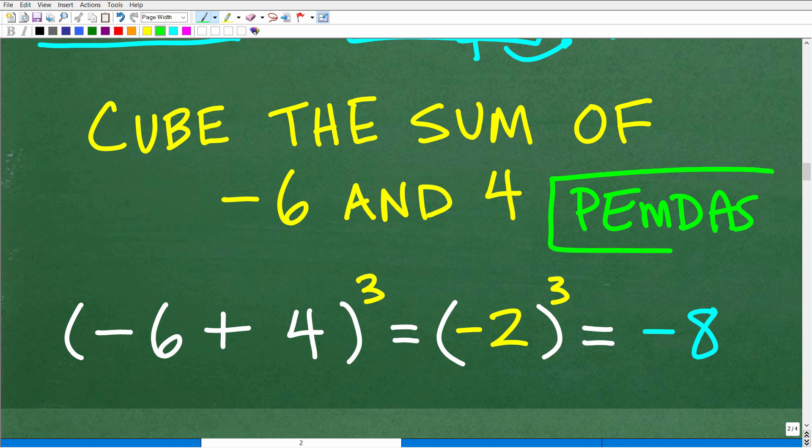The order of operations tells us what to do first. So what are we going to do first? We're going to go P. We're going to do what's inside parentheses first. So that's this right here. Negative 6 plus 4, of course, is negative 2. After that, we're going to go to E, which is powers or exponents. So negative 2 cubed, of course, is negative 8.